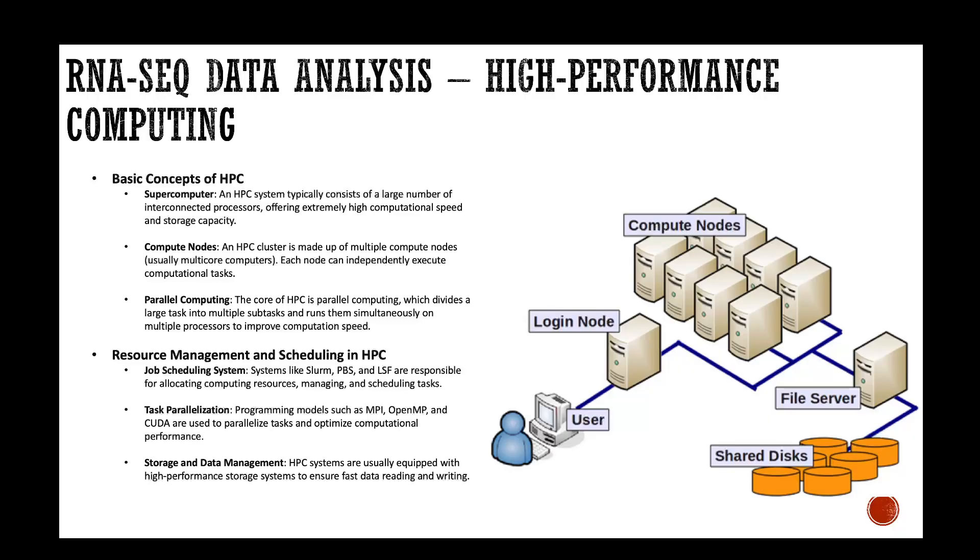For example, you have a powerful lab computer in your lab. It takes five hours to process one sample of your RNA-seq dataset. But you have 100 samples in this dataset. It will take your computer like 500 hours to process all the samples, which is 20 days, which is unrealistic. But for HPC, you can run all 100 samples at the same time in the same amount of time. Like five hours for all 100 samples. That's the beauty of parallel computing.